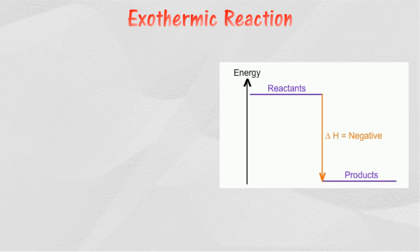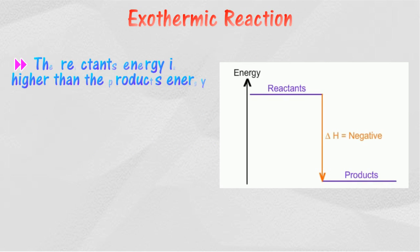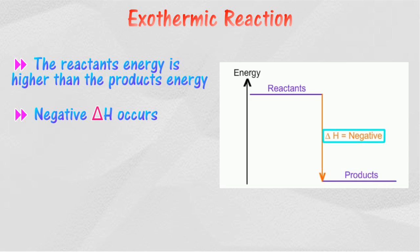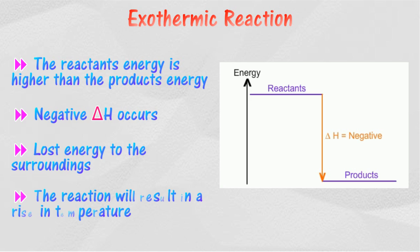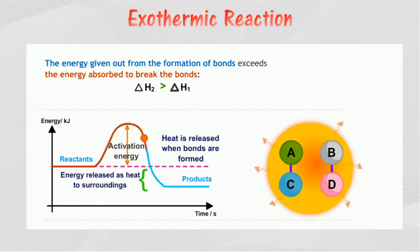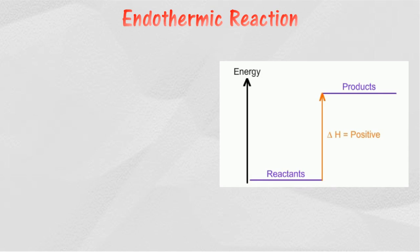In the energy level diagram of an exothermic reaction, if the energy content in the reactants exceeds the energy content in the products, then Delta H is negative. Negative Delta H occurs in exothermic reactions. The reactants have lost energy to the surroundings, and the products contain less energy compared to the reactants. The reaction results in a rise in temperature. The energy given out from the formation of bonds exceeds the energy absorbed to break the bonds, and energy is released as heat to the surroundings.